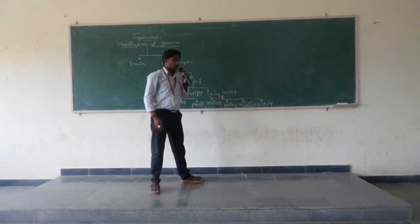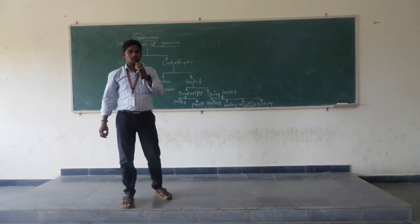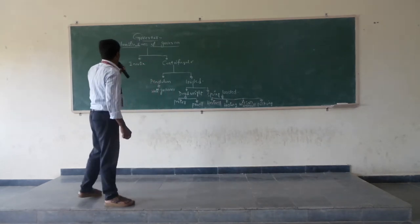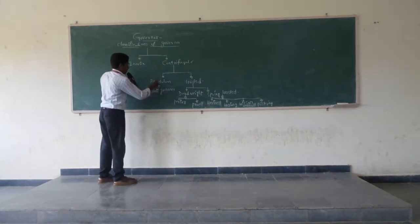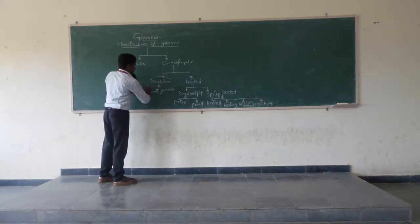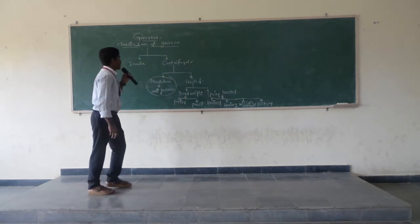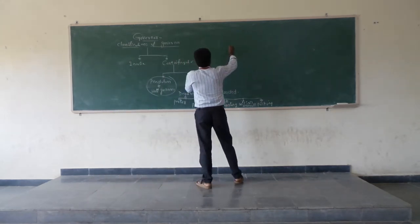This completes the brief explanation of the classifications of governors. Now let us look at the pendulum type governor — specifically the derivation part of the Watt governor — and examine the diagram.